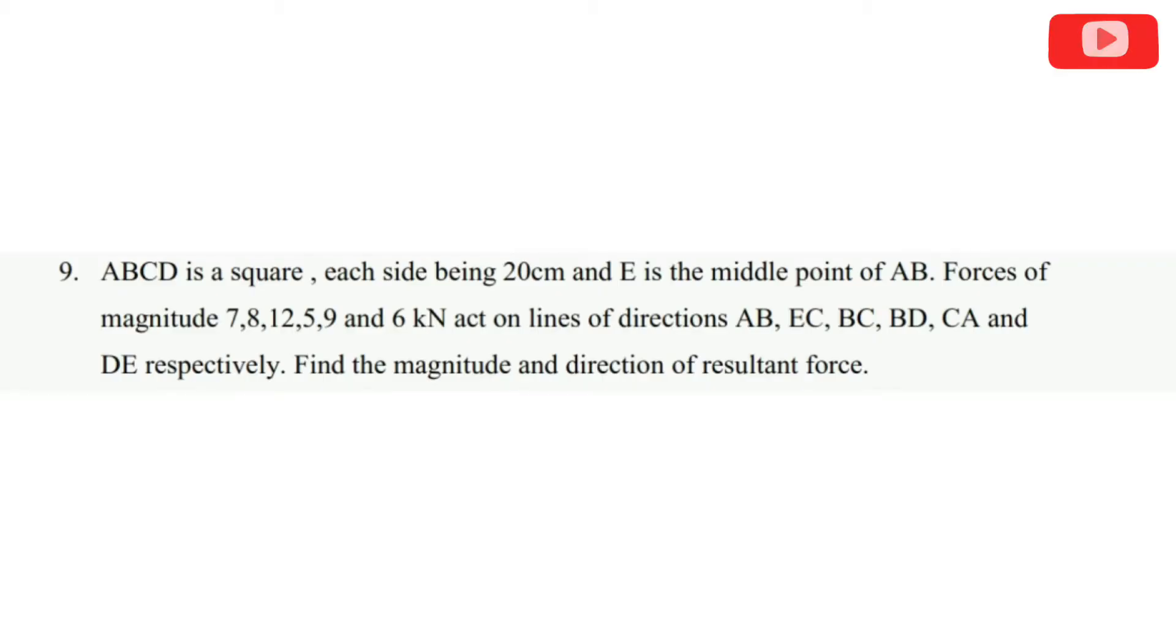First question: ABCD is a square, each side being 20 cm, and E is the midpoint of AB. Forces of magnitude 7, 8, 12, 5, 9, and 6 N act on lines of directions AB, EC, BC, BD, CA and DE respectively. Find the magnitude and direction of resultant force. This is a 10 mark question from previous papers.